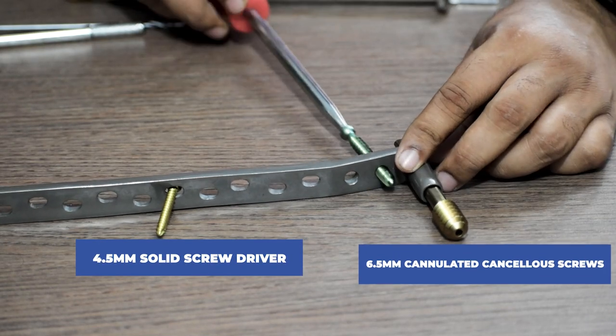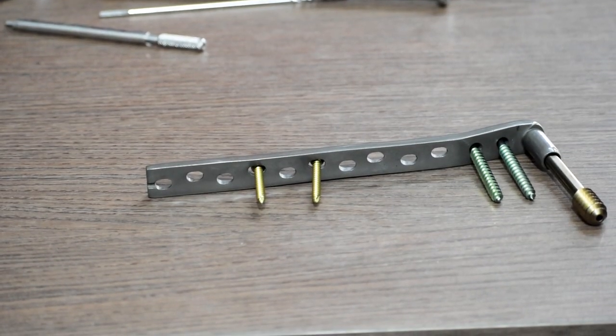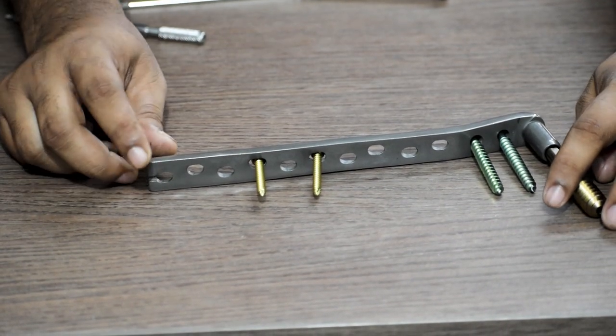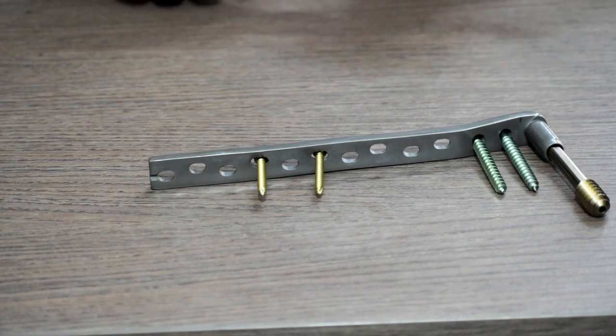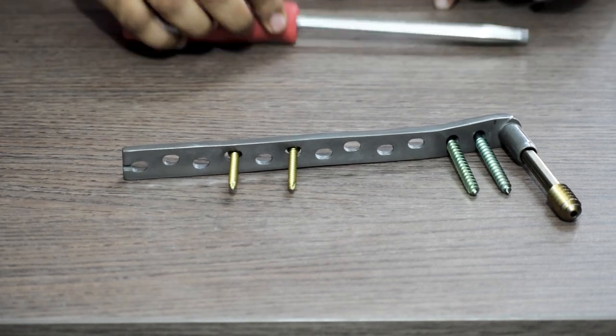Again use a 4.5 mm solid screwdriver to fix the cancellous screw. Then we fix as many screws as the surgeon wants and is required. That's all for the fixation procedure of DCS plate and screw.